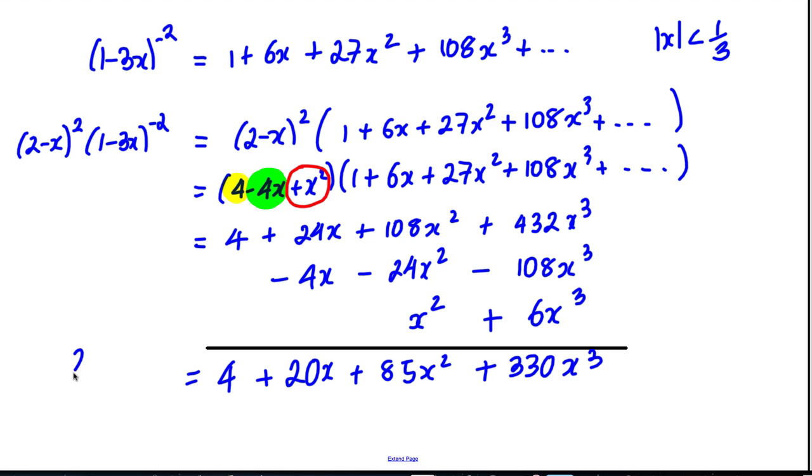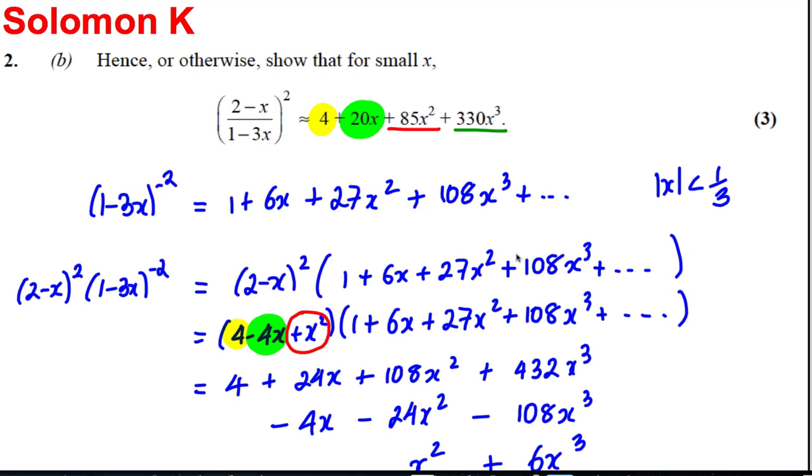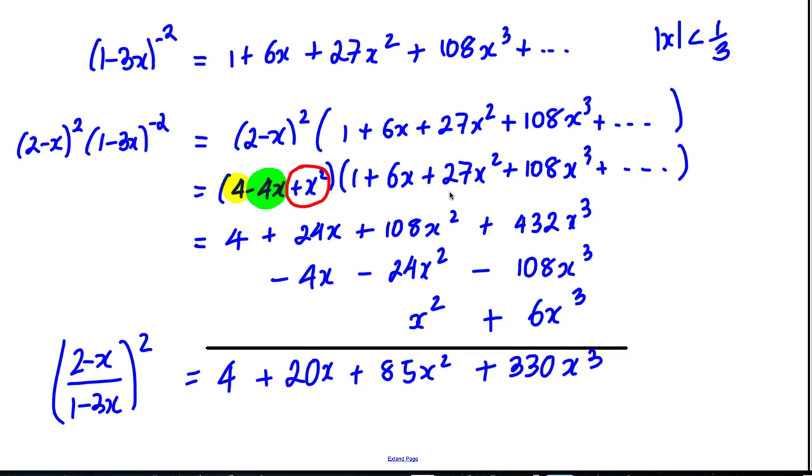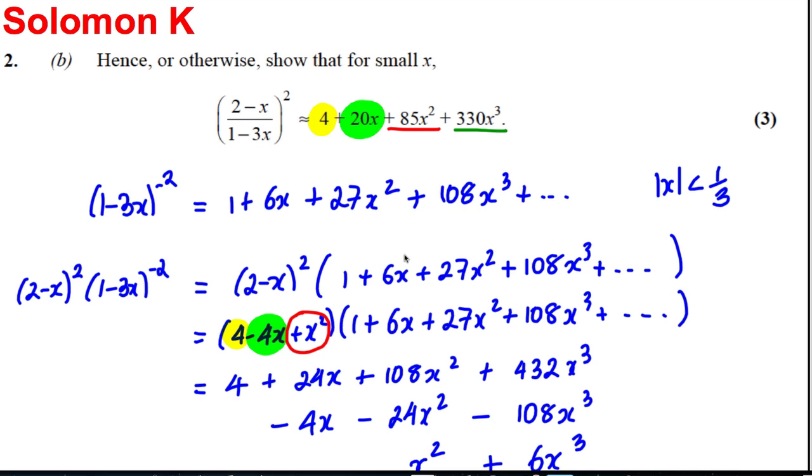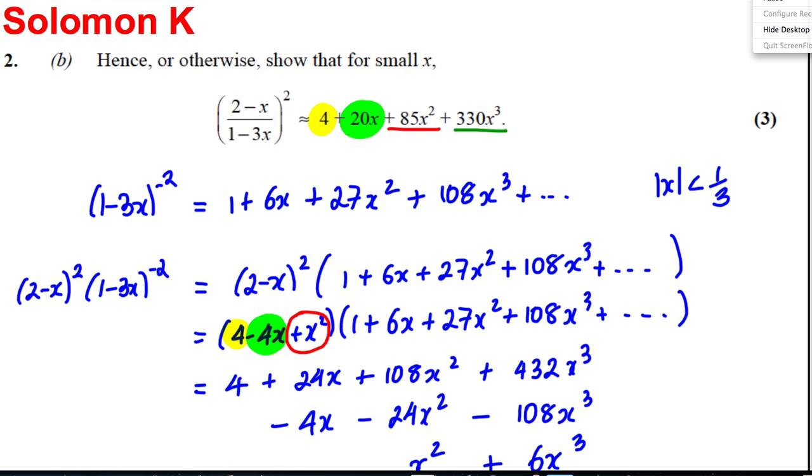So the thing we're looking for, the (2 - x)/(1 - 3x) all squared is equal to the following. The best way of doing it, I hope you've realized, is to do it the way I've done it in column method to make it easier. If you try and multiply the thing out and collect like terms in different lines, it's too much and you're going to make a mistake. Like that, nice and easy, easy to work out. And we're done.